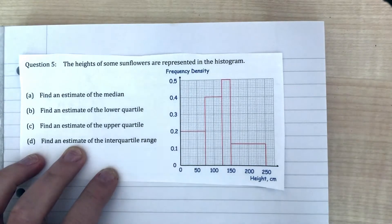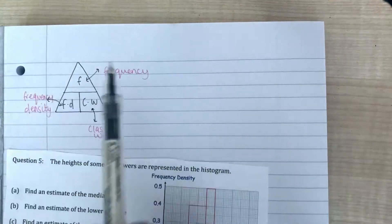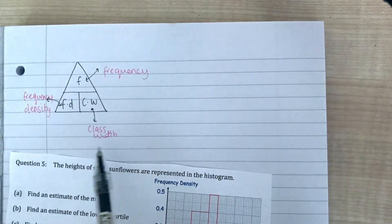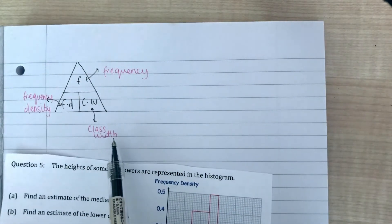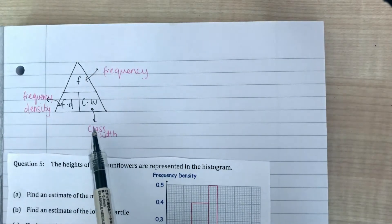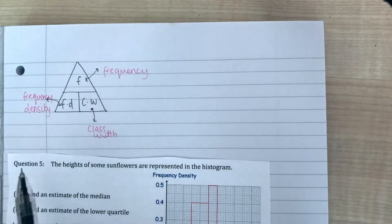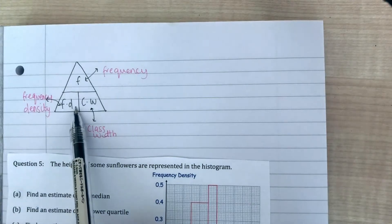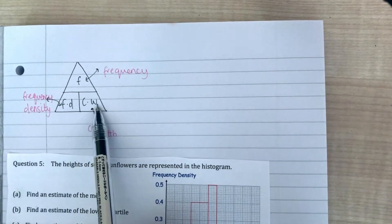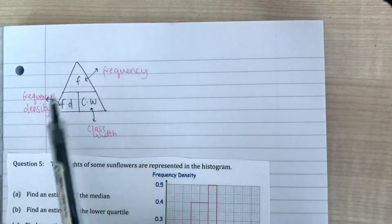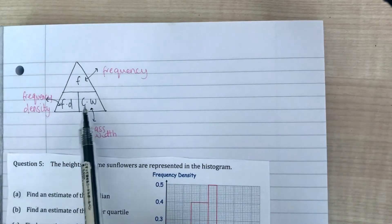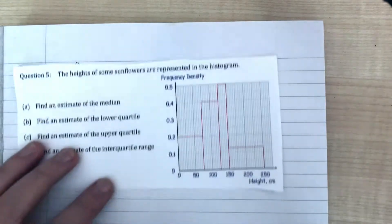All we need is this little formula triangle. We know that to work out frequency density we do frequency divided by the class width, and we can rearrange this to get the information we want. The first thing I want to fill in on my histogram to make my life easier is the frequency of each bar.